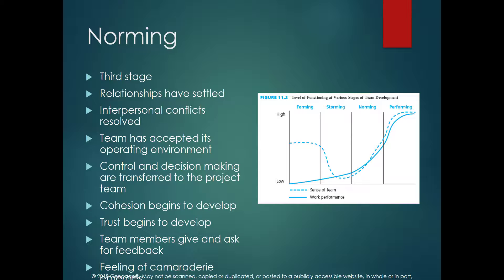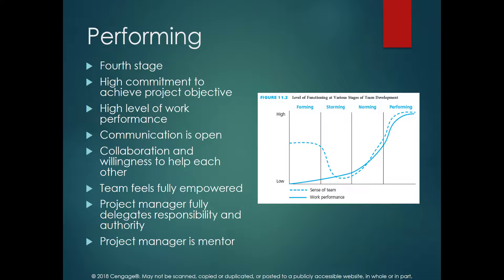The next step is the Norming stage, where relations between project members become settled and conflicts are resolved. Team members can work more collaboratively and provide feedback to each other. They have trust in each other, the feeling of being a team increases, productivity improves, and actual project progress increases. The sense of being a team is much higher than in the storming stage.